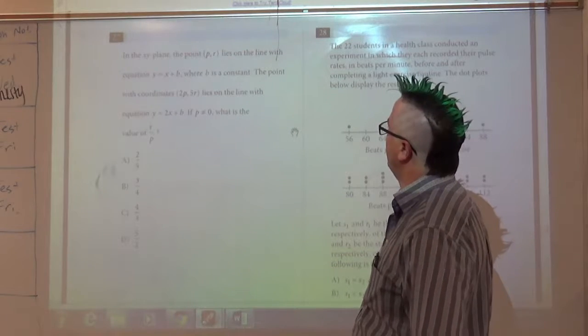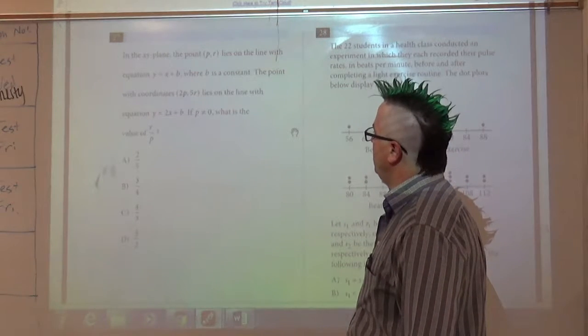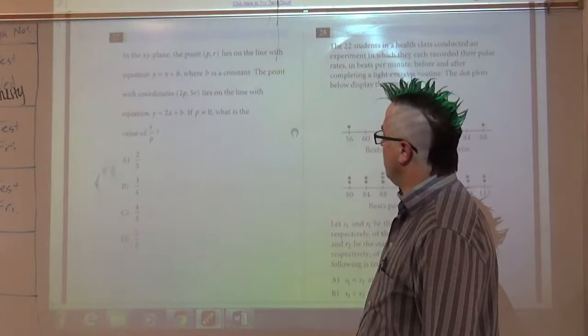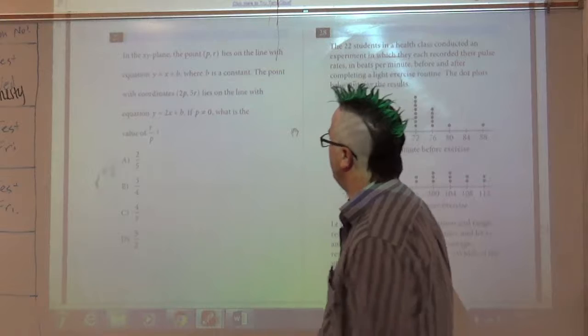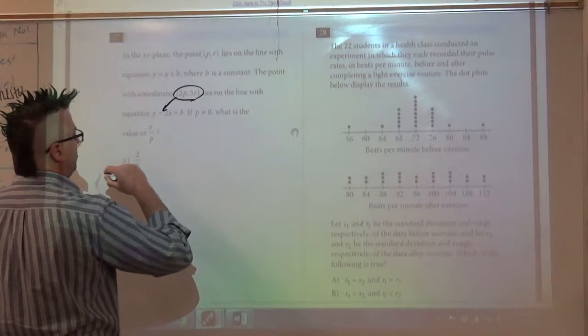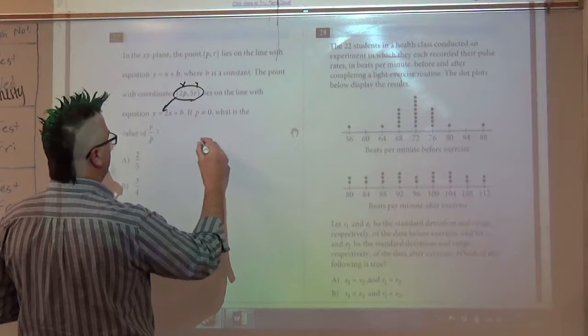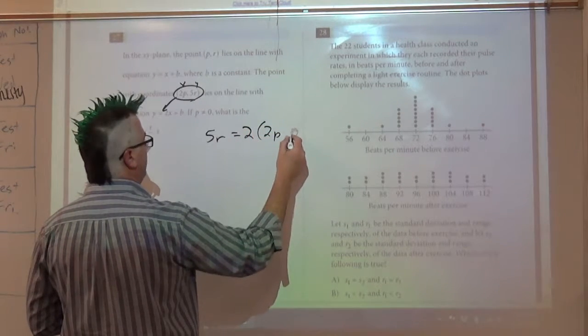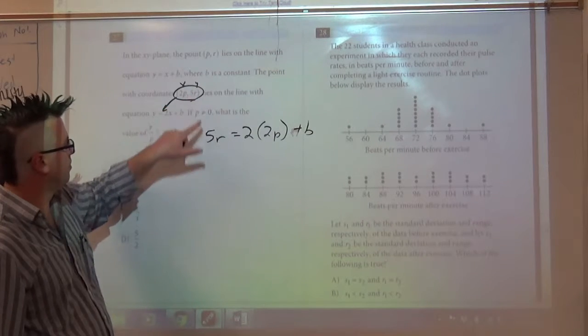Now, number 27. In the xy-plane, the point (2P, 5R) lies on the line with equation Y equals X plus B. The point (P, R) also lies on the line. If P is not equal to zero, what is the value of R divided by P? Alright, so this line is on this equation. This is the x part, that's the y part, so I can put those in there. So that means 5R equals 2 times 2P plus B.